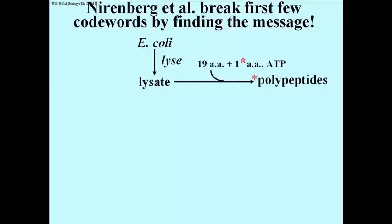They got a lysate and the first thing they did, which was very dramatic at the time, was to add 19 amino acids and a 20th one that was radioactive, along with ATP on the grounds that making polypeptides would probably consume a great deal of chemical energy. And lo and behold, they produced radioactive polypeptides.